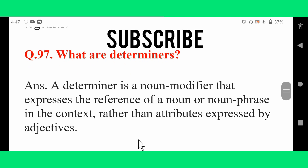What are determiners? A determiner is a noun modifier that expresses the reference of a noun or noun phrase in the context, rather than attributes expressed by adjectives.